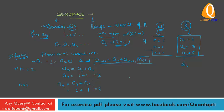Hence the terms of the sequence are 1, 1, 2, 3, 5, 8 and so on, known as the Fibonacci sequence.